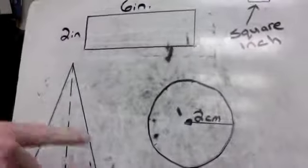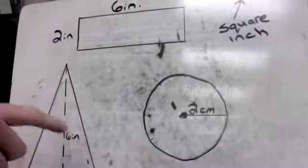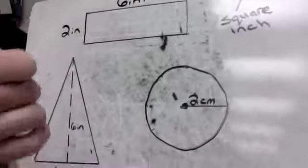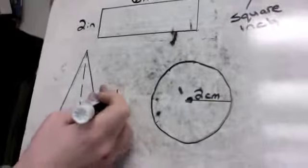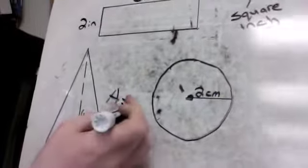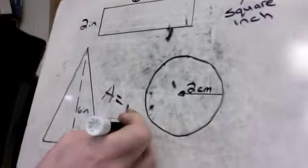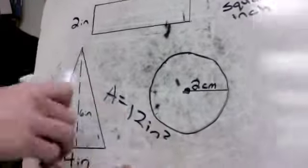So I'm looking at this, and we're not going to talk about how to find the areas yet, because that's going to come up next. But I will tell you that every single one of these shapes has an area of 12 square inches.